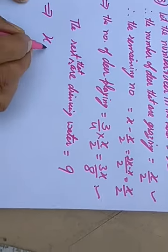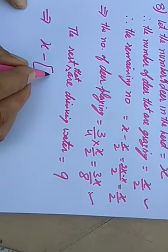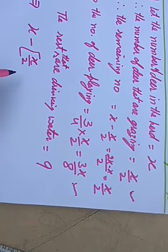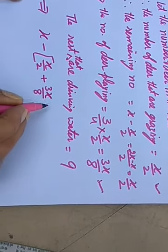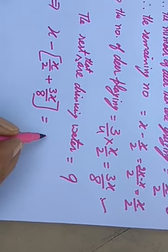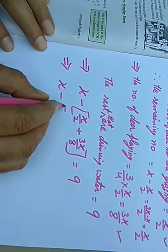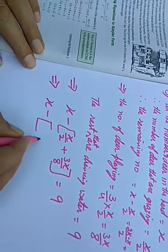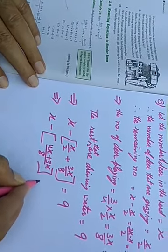So let's subtract them. This means X minus X upon two minus 3X upon eight. You will need to calculate this. The LCM is eight, which gives you 4X plus 3X equal to seven X upon eight. So X minus seven X upon eight is equal to nine.